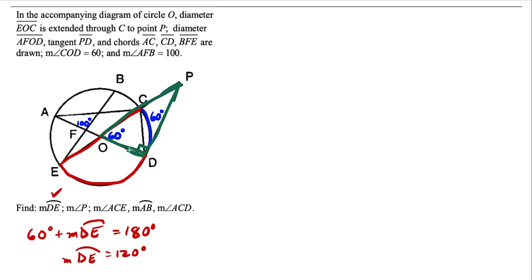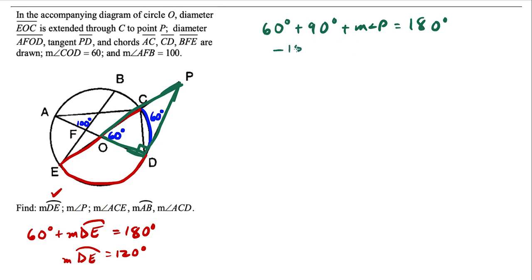Looking at triangle PDO, we have a 60 degree angle, plus a 90 degree angle, plus the measure of angle P. The three angles have to add up to 180 since all triangles in two dimensions have 180 degrees of angle measure. So 60 plus 90 is 150, and subtracting 150 from both sides gives us the measure of angle P is 30 degrees.